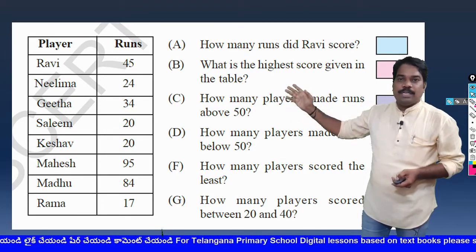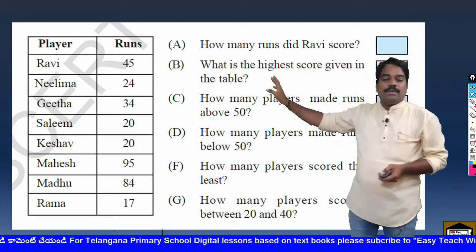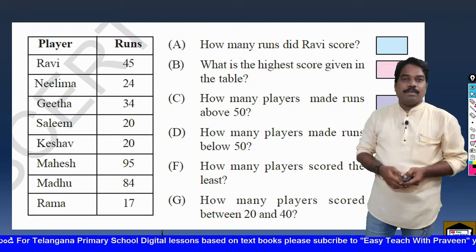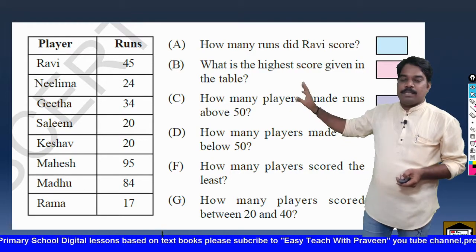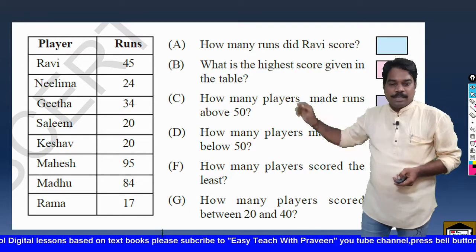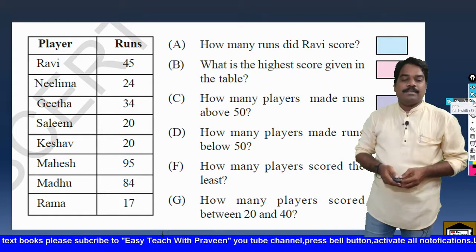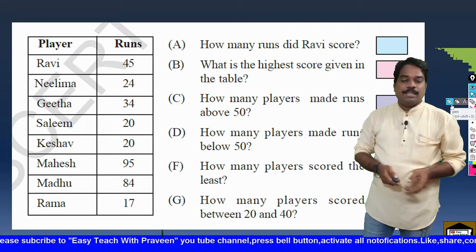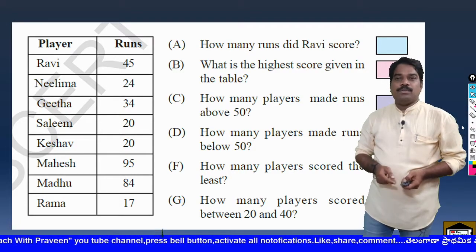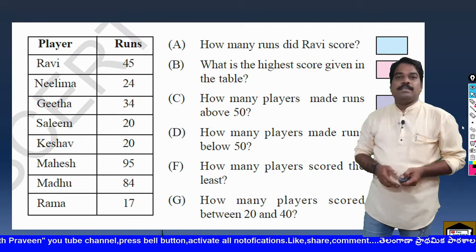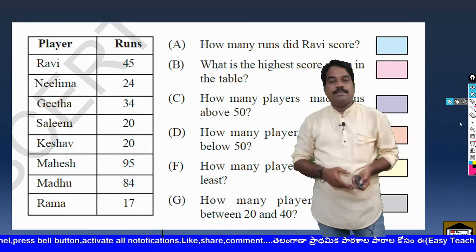In the table, in the first column, the first name is Ravi. Opposite to Ravi there is a number in the runs column. That number is 45. So we have to write the answer — that is 45.